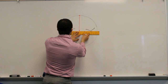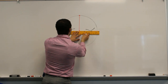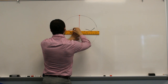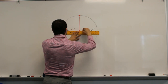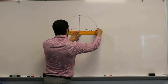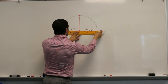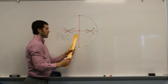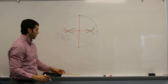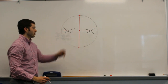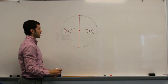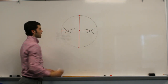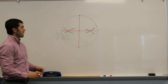You can tell if you did this right because it should go through the center of the circle. There's a little bit of error from the compass, but we've gone through the center of the circle and can extend that out to the circumference.